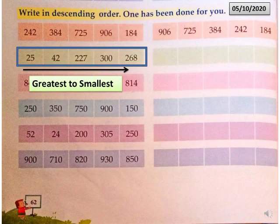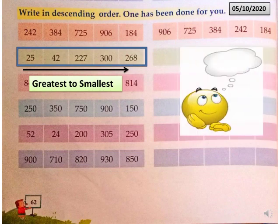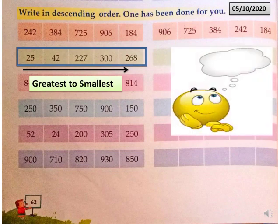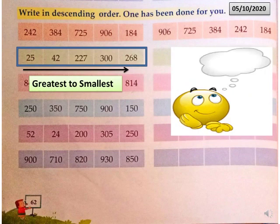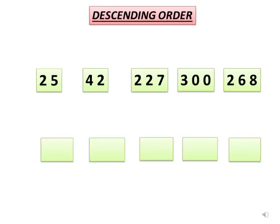Remember, a two-digit number is always smaller than a three-digit number. First, we have to find out the greatest number. To find the greatest number, we have to compare the hundreds place digit of the given numbers. But in this question,